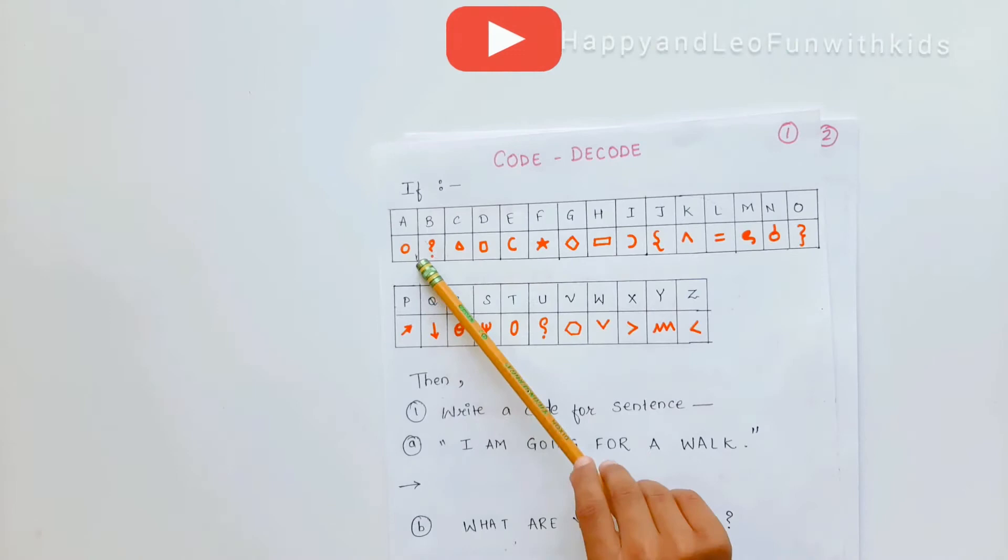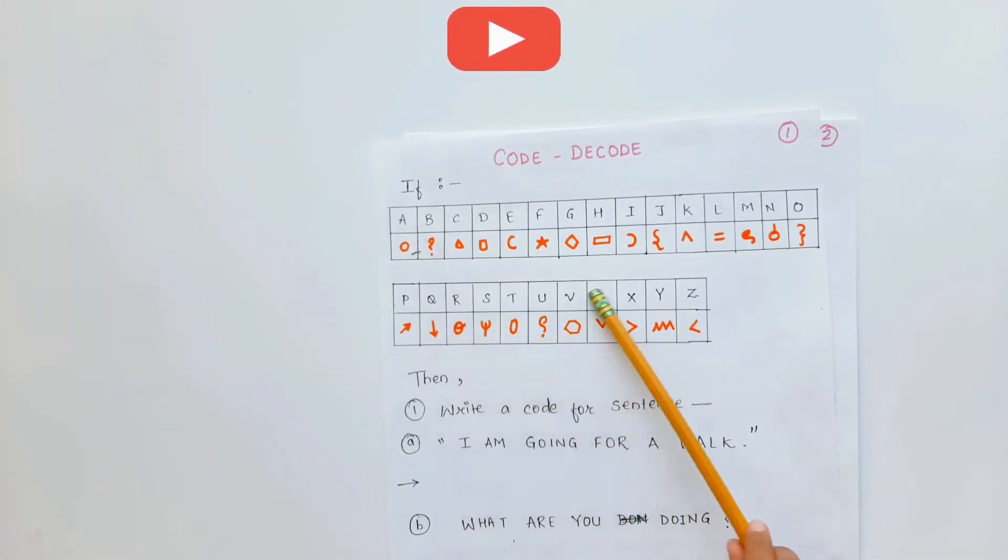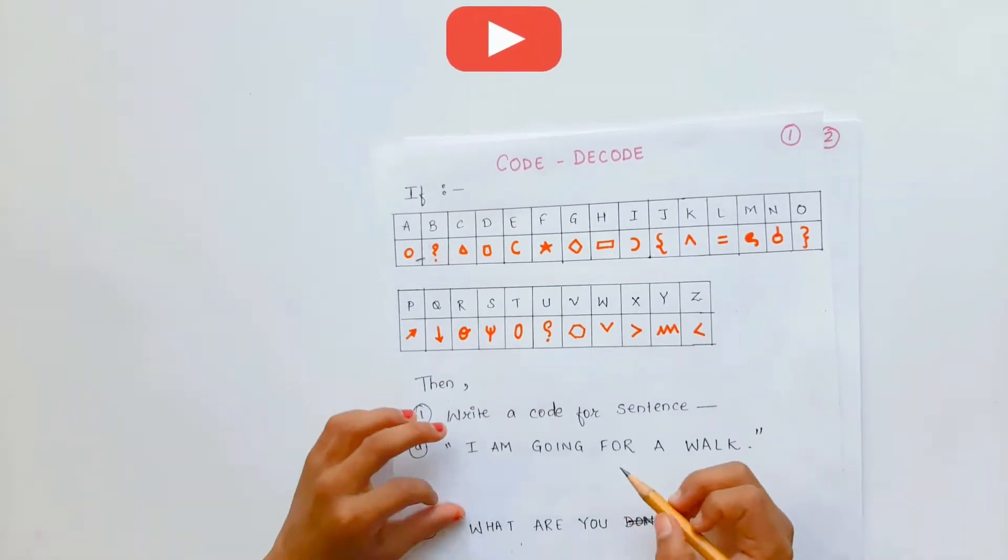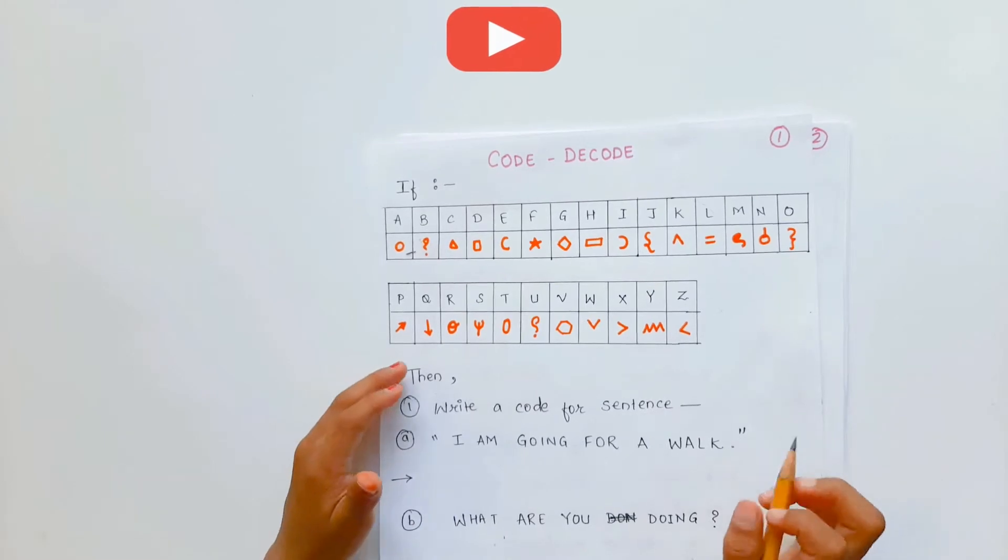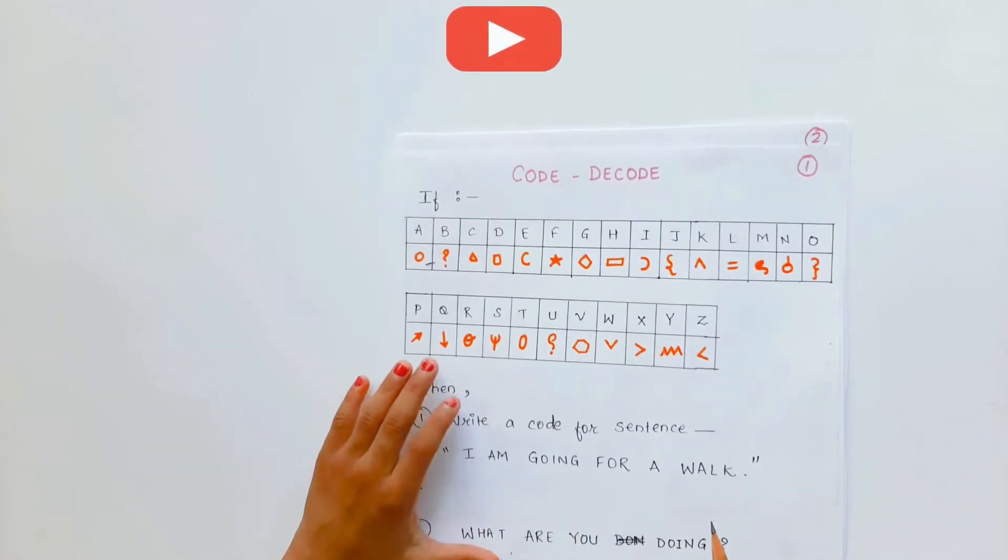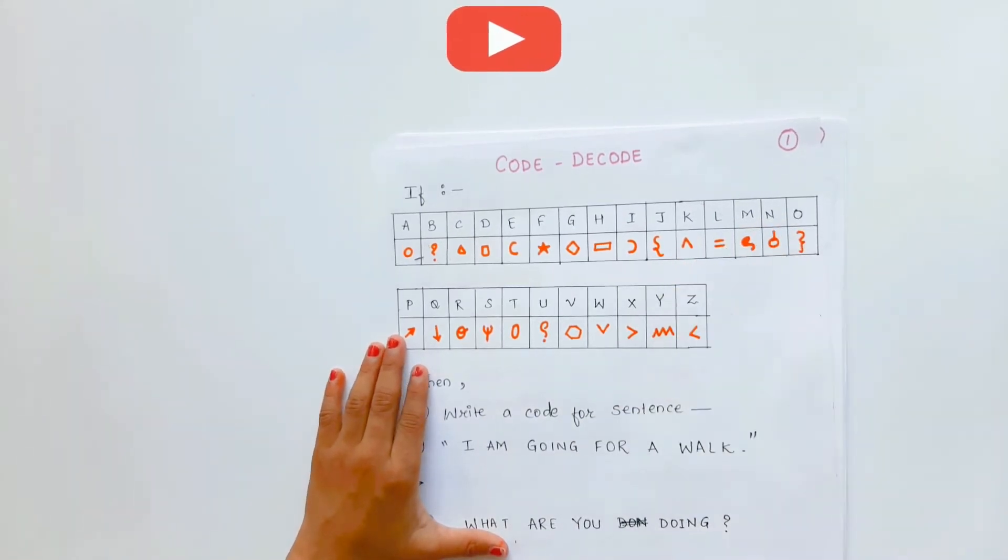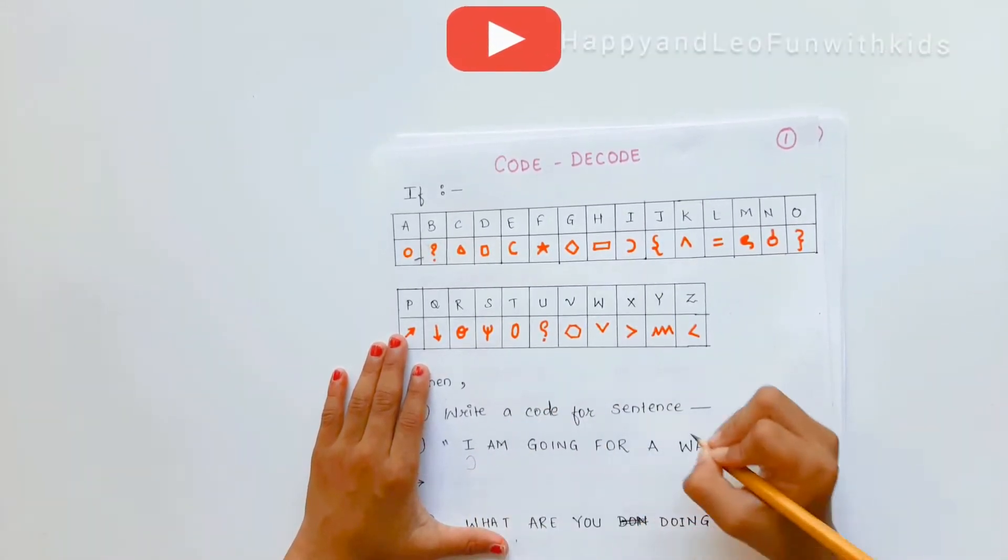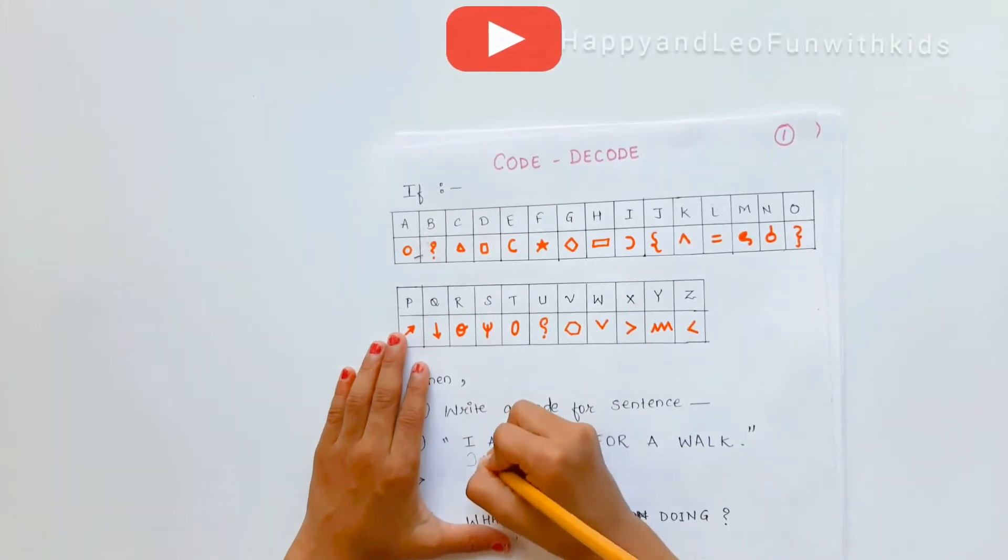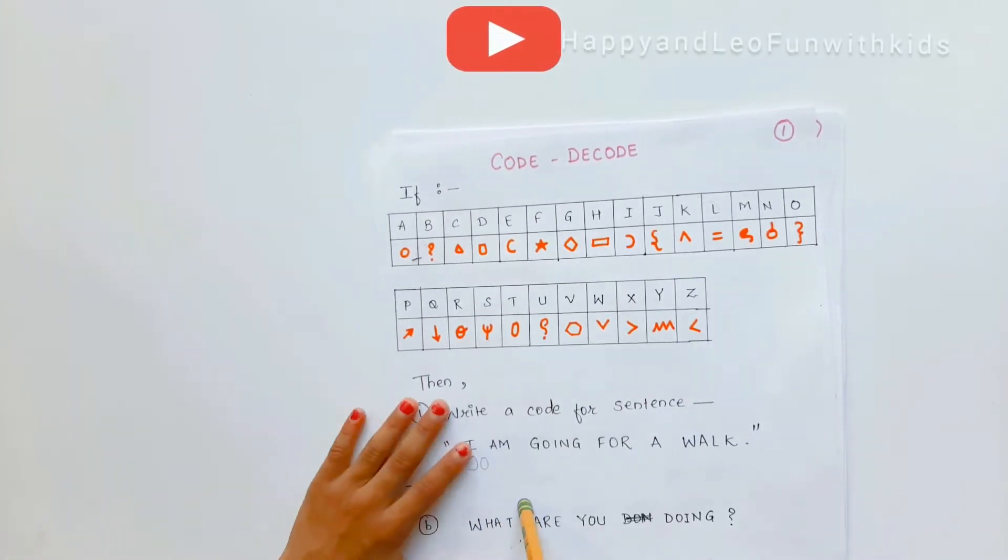My mom has given some English letters here and she has also given me some coding symbols here. And what I am going to do is, suppose I am going for a walk. This is the symbol I use. So I, I. This is the symbol I use. And A is over here. So it's A. I need a space.